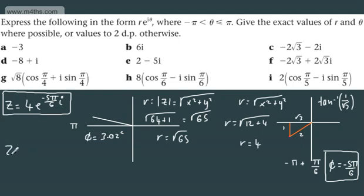So 3.02 radians is now our value of θ. So we can write this as z equals √65·e^(3.02i). And that is expressed now in exponential form.